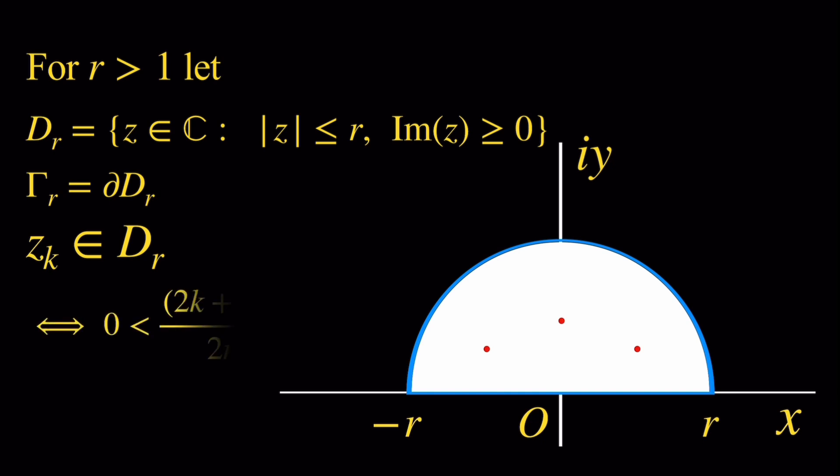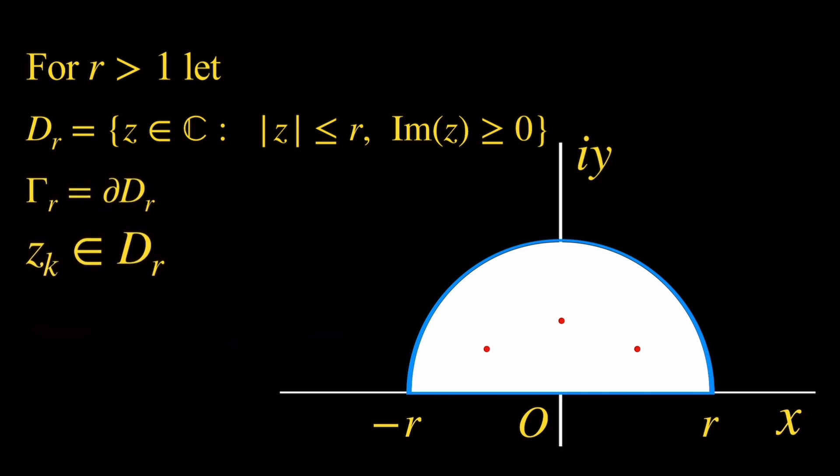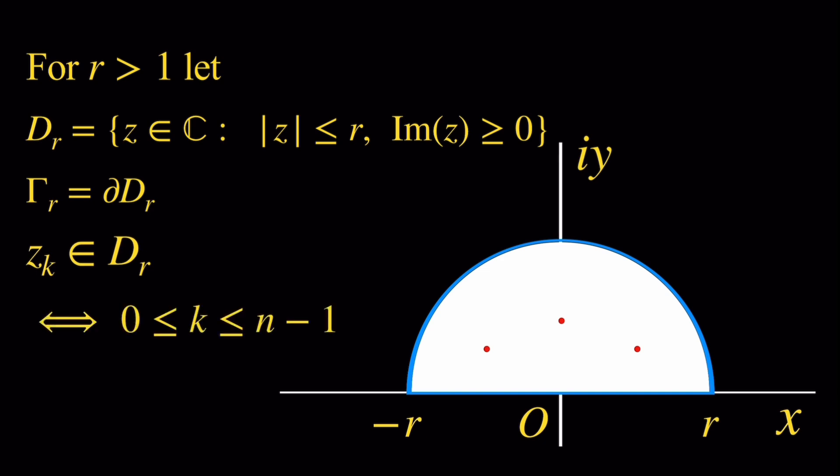Z sub k is inside D sub r if and only if (2k plus 1) times pi over 2n is between 0 and pi. We can solve this compound inequality and get that k must be between 0 and n minus 1. Now that we know k goes from 0 to n minus 1, we can apply the residue theorem.